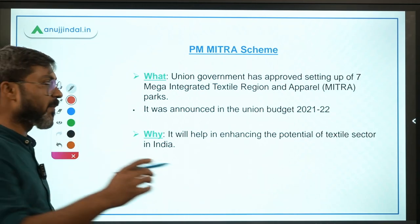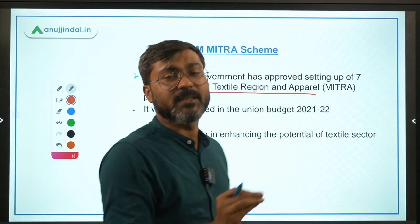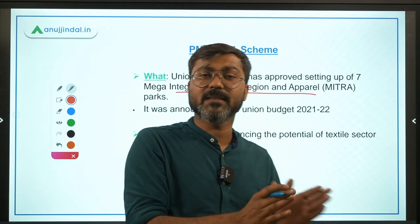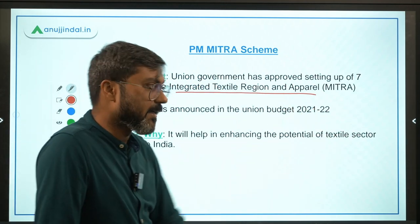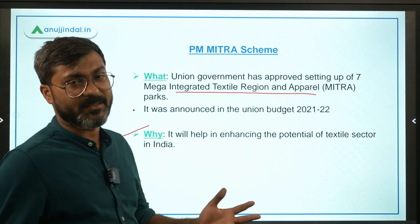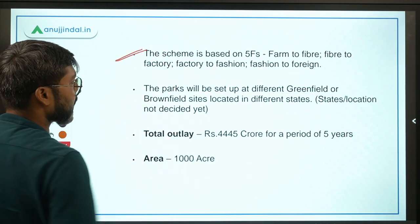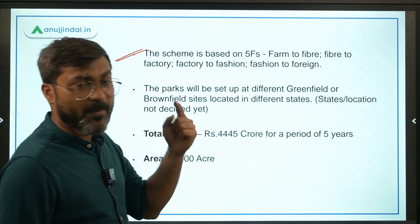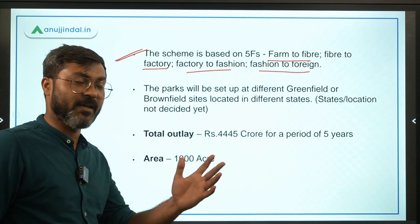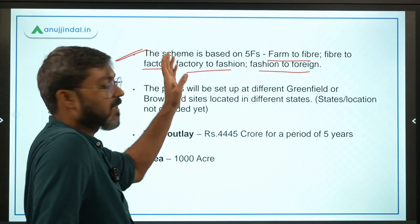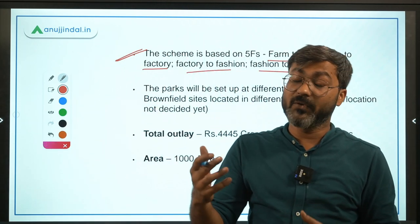The union government has approved the setting up of seven mega integrated textile region and apparel — that is the full form of MITRA — parks across the country. These seven locations have not been identified yet, but the government has approved the scheme. This will help in enhancing the potential of the textile sector in the country. The scheme is based on five F's: Farm to Fiber, Fiber to Factory, Factory to Fashion, and Fashion to Foreign.